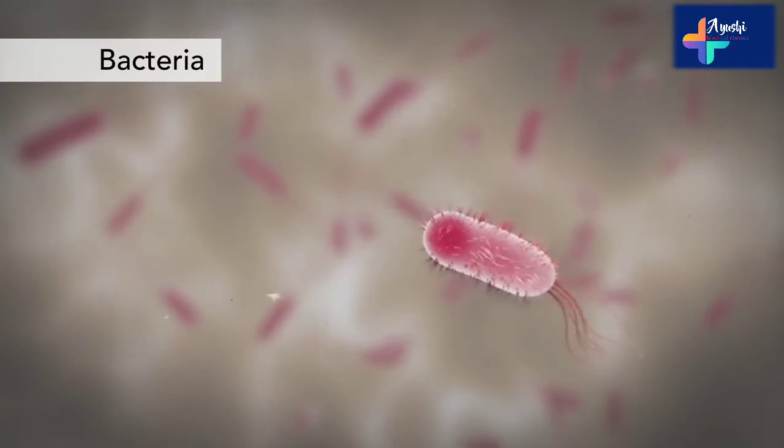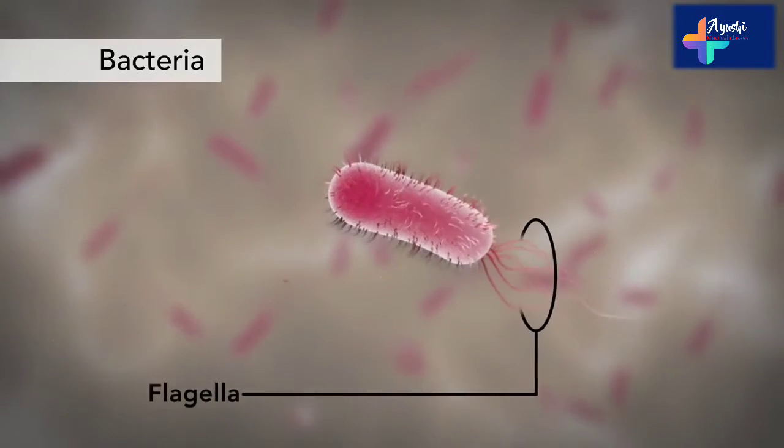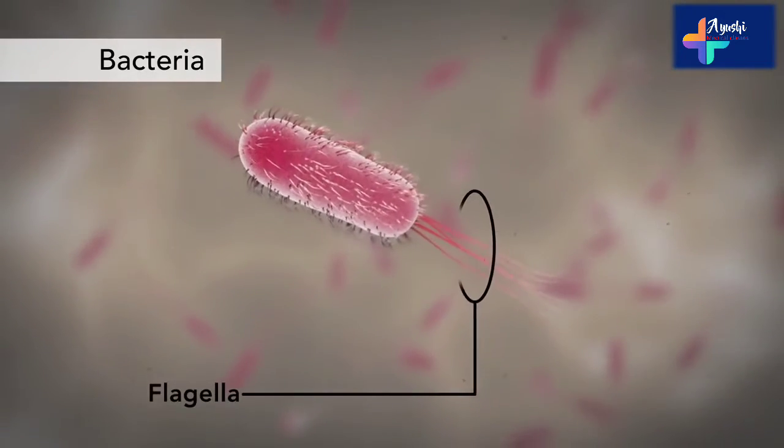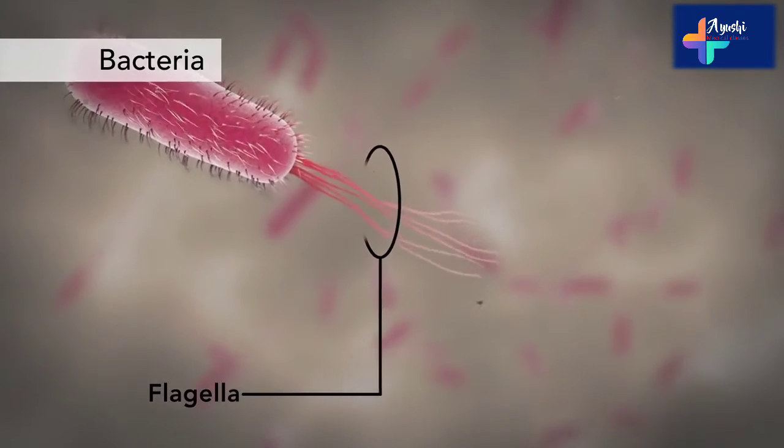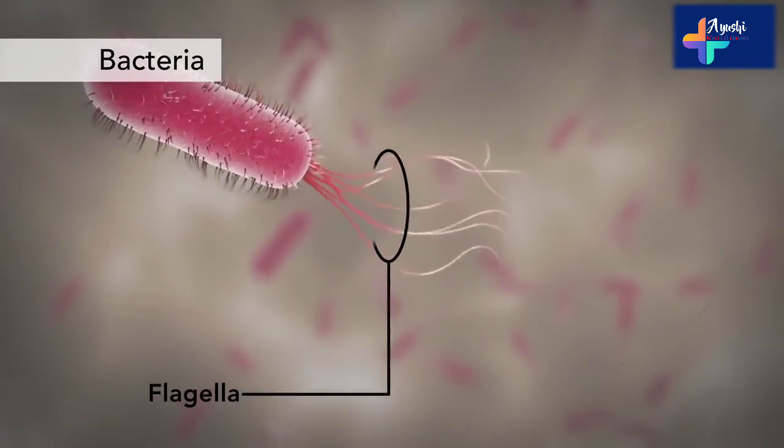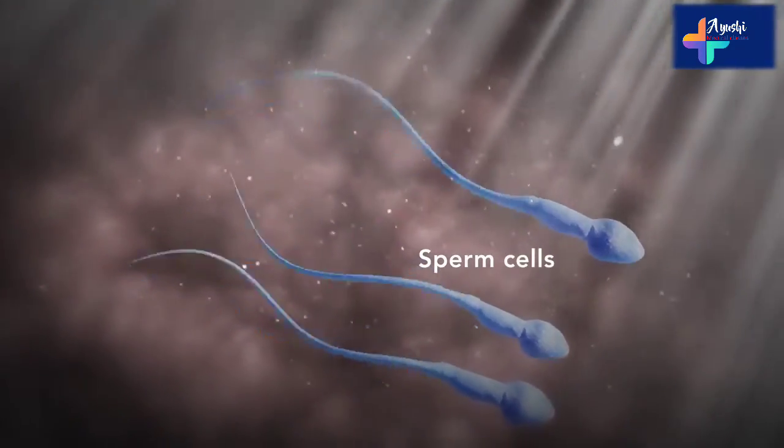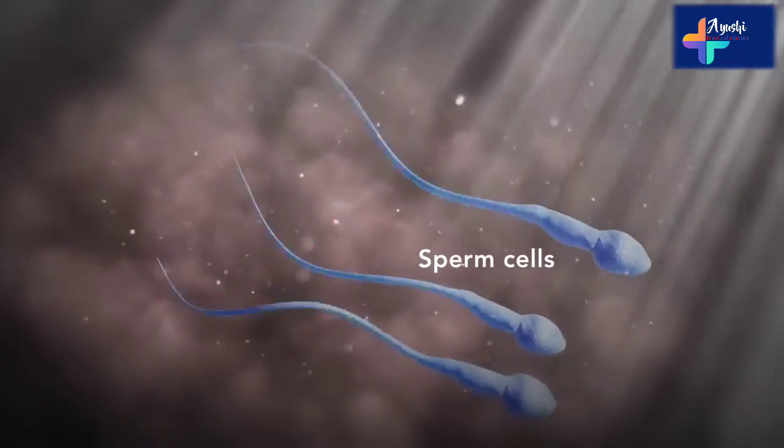Another unique feature in some cells is flagella. Some bacteria have flagella. A flagellum is like a little tail that can help a cell move or propel itself. The only human cell that has a flagellum is a sperm cell.